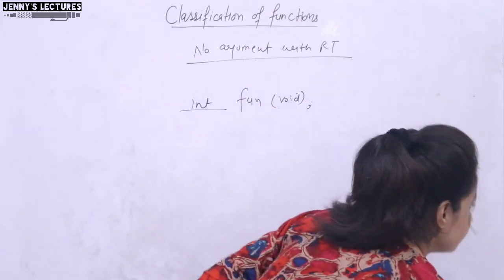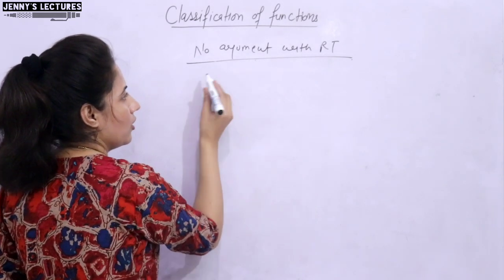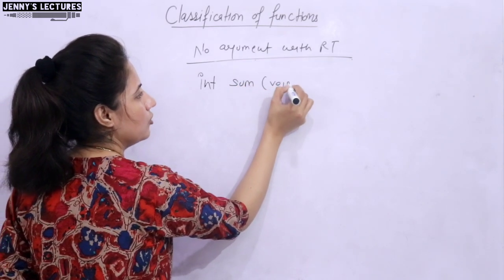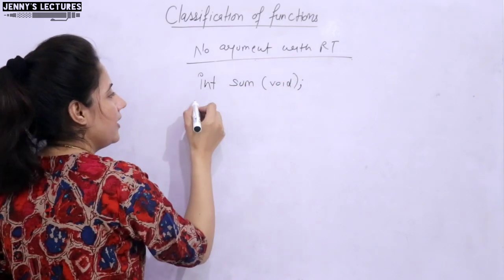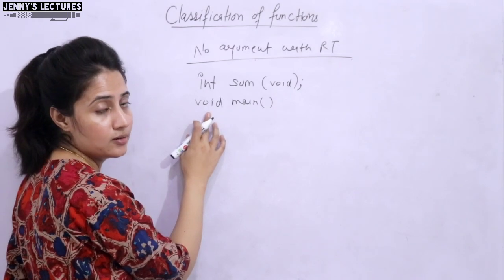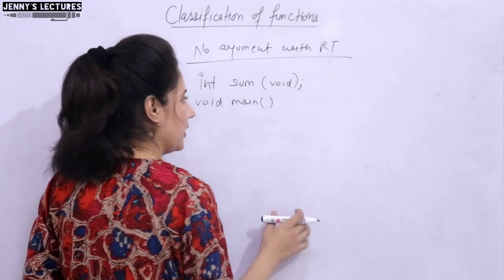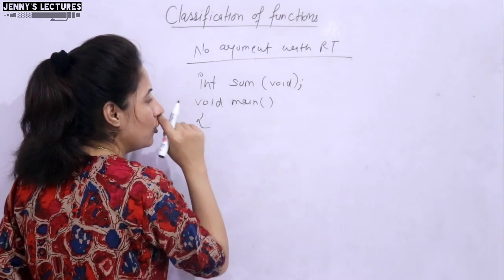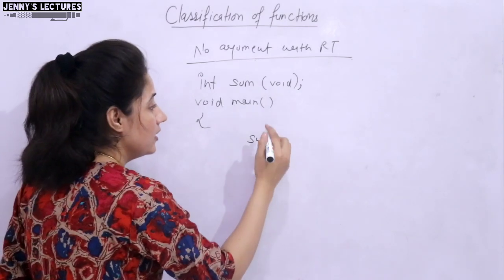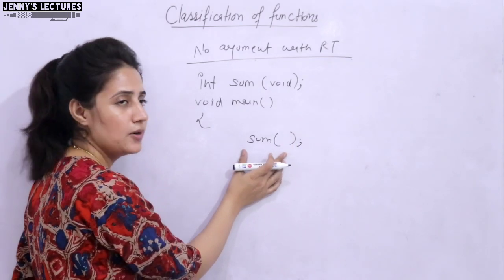Let's take an example — same example of sum. How to declare: return type, then sum, then no argument. In main, the return type of main I am taking as void; you can also take int. And in main, I am calling this function sum with no argument to pass. This is the simple calling of the function.